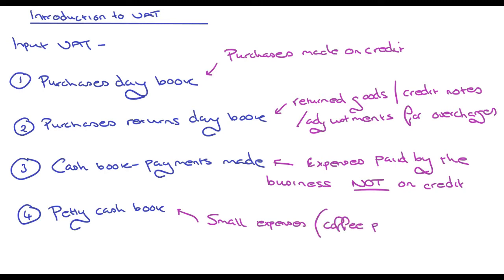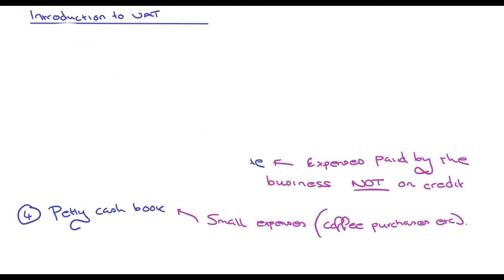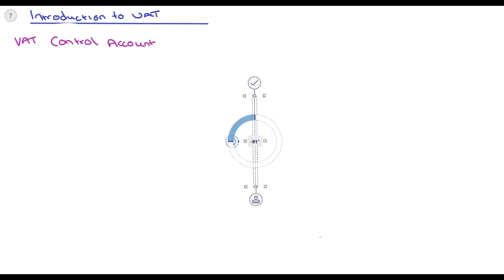Finally, we have the petty cash book for small expenses. You might have a petty cash tin at work for things like coffee purchases or very small purchases like a lock or repairs. Usually a company keeps a float in the petty cash tin of about £100, and that's recorded separately. But all of these are important because they feed the VAT control account.